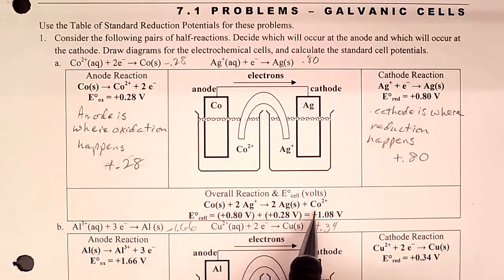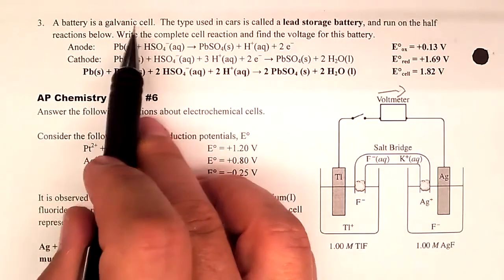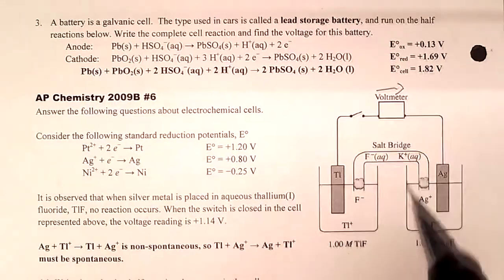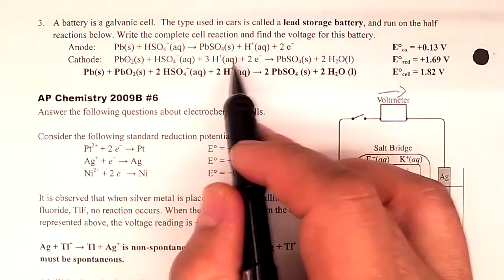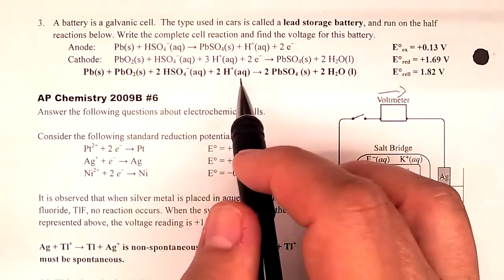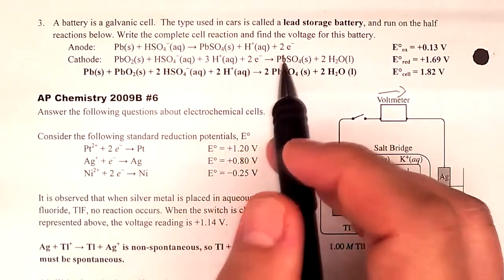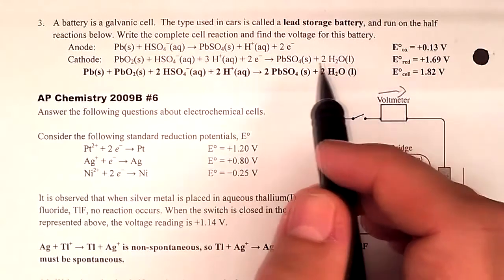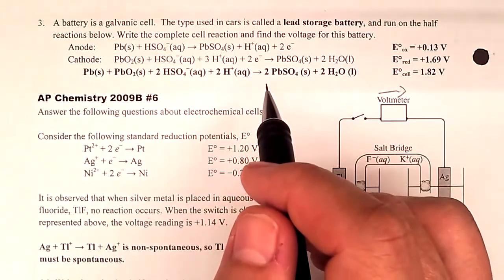Note the term 'net ionic reaction' — test problems may ask specifically for that rather than the overall reaction. Also, another term you need to know is galvanic cell, named after Mr. Galvani. A voltaic or galvanic cell is essentially a battery, though technically a battery is a collection of cells.